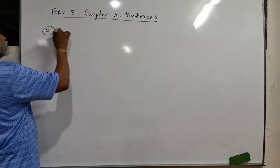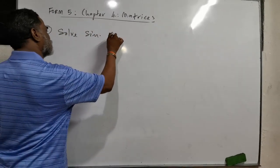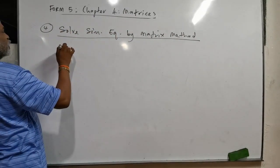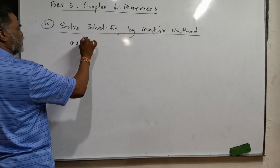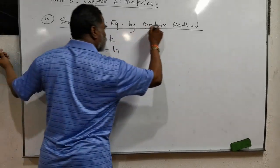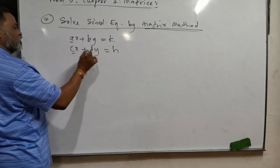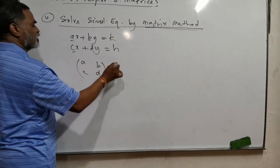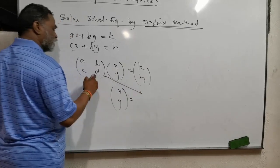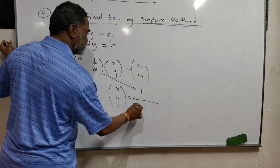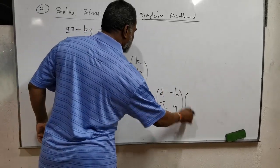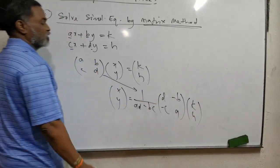The fourth aspect is solving simultaneous equations by matrix method. For example, if they give AX + BY = K and CX + DY = H, by matrix method you write [A, B; C, D] times [X; Y] equals [K; H]. To find X and Y, you take the inverse of the coefficient matrix times [K; H]: that is 1/(AD - BC) × [D, -B; -C, A] × [K; H].